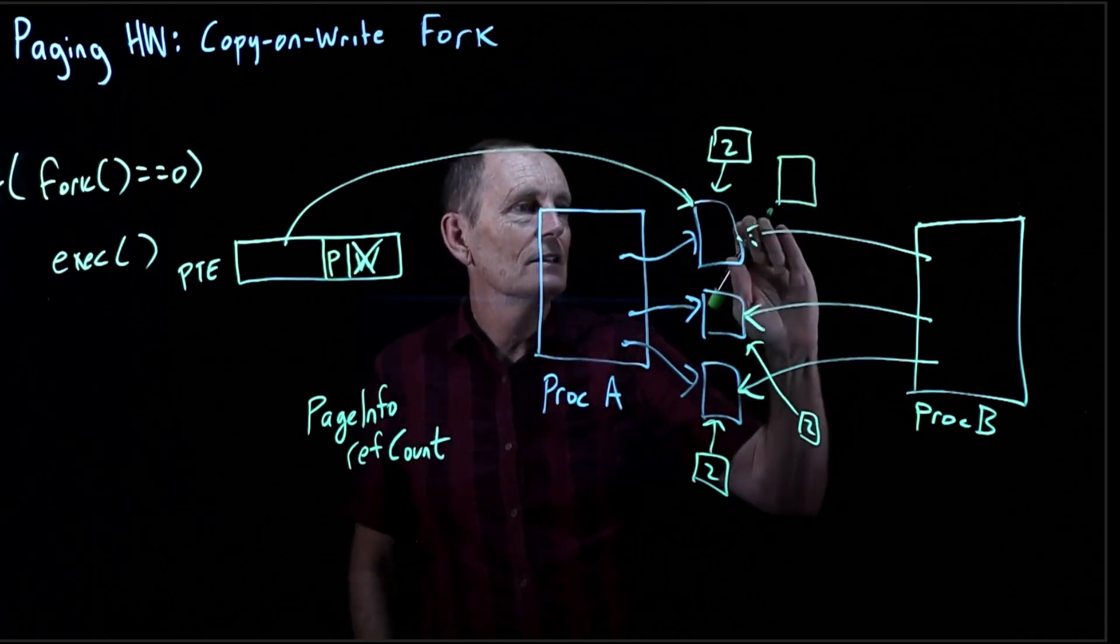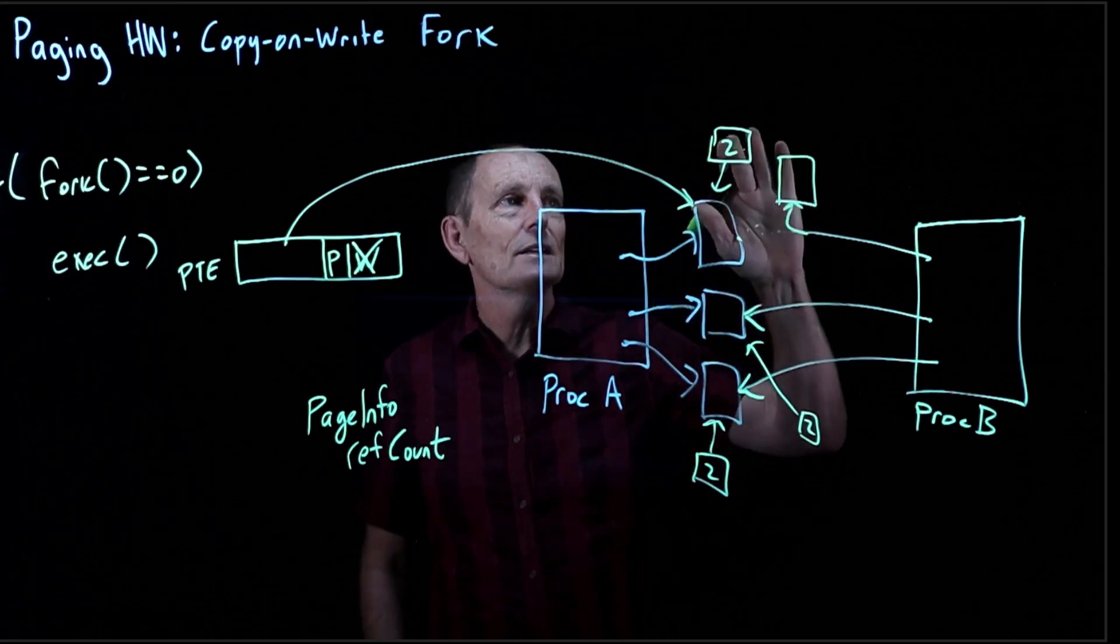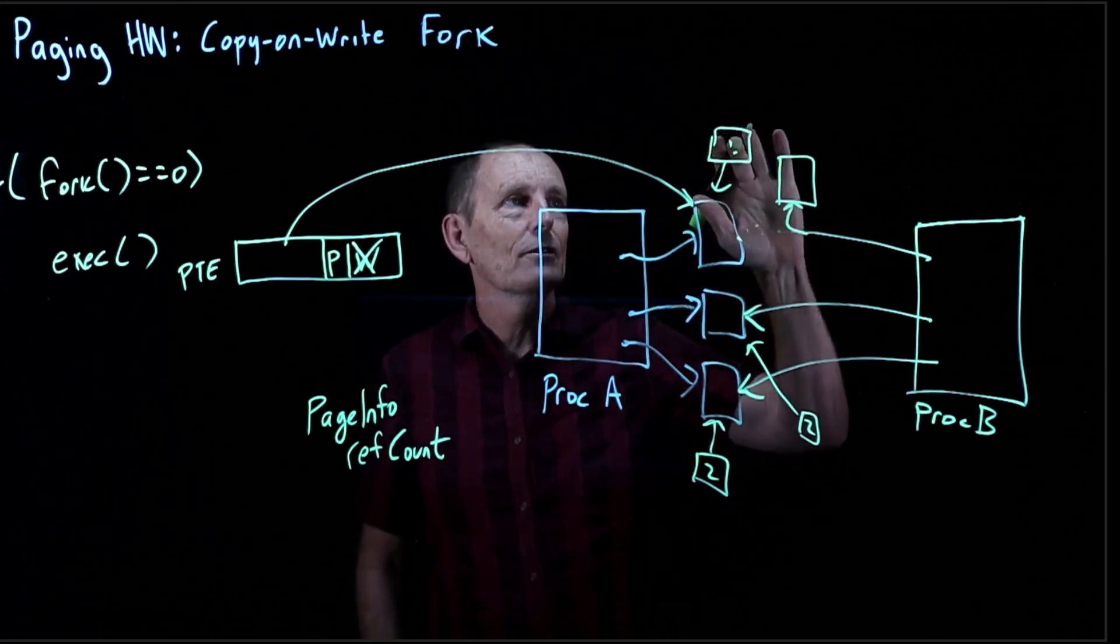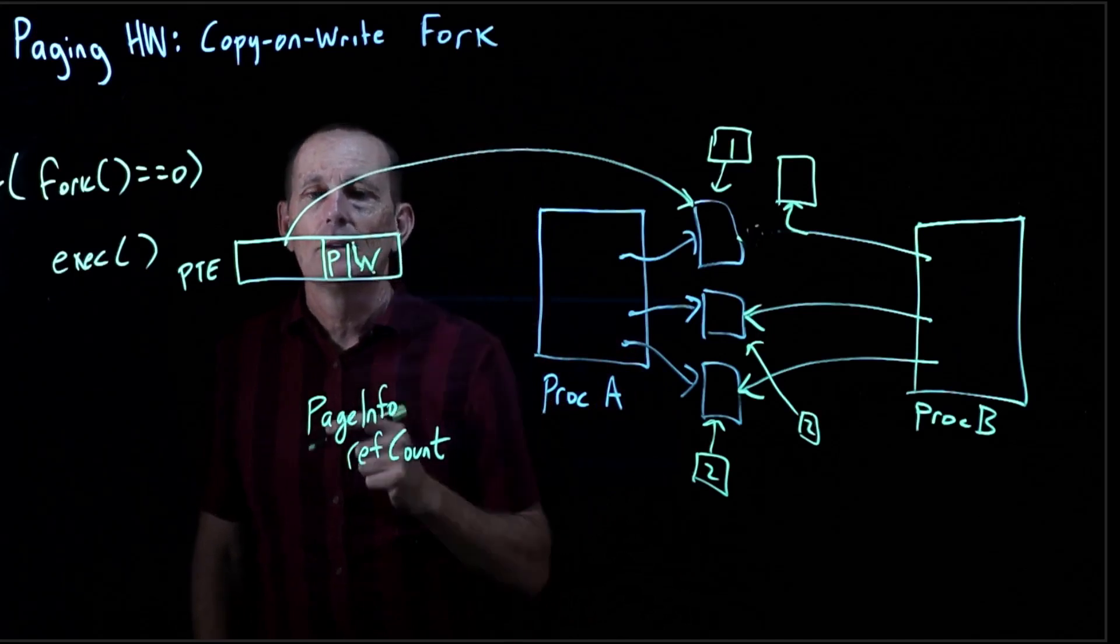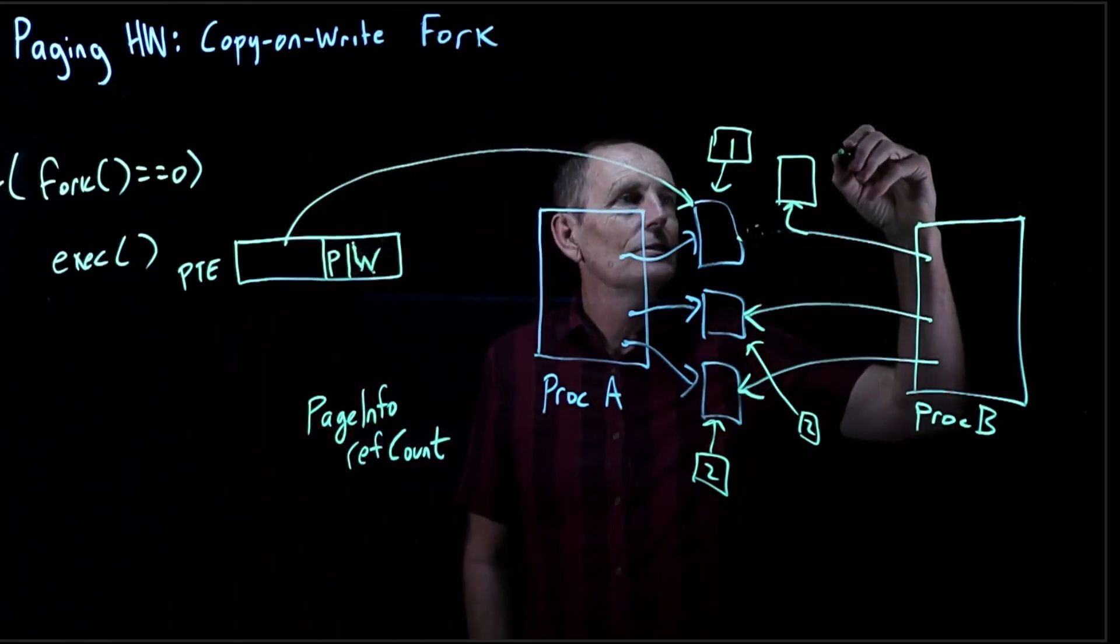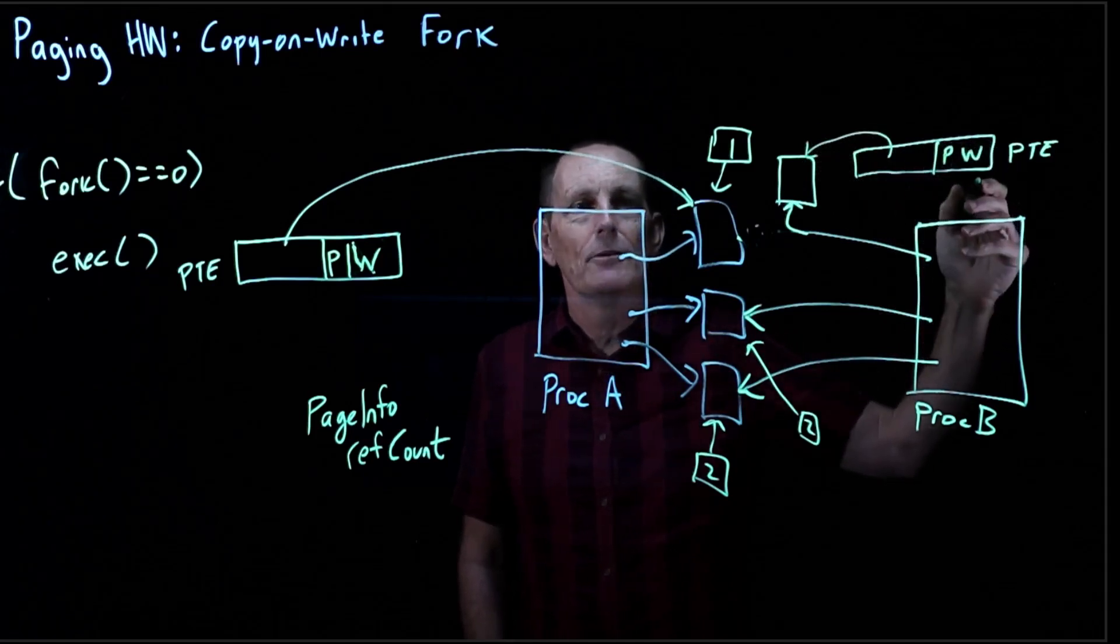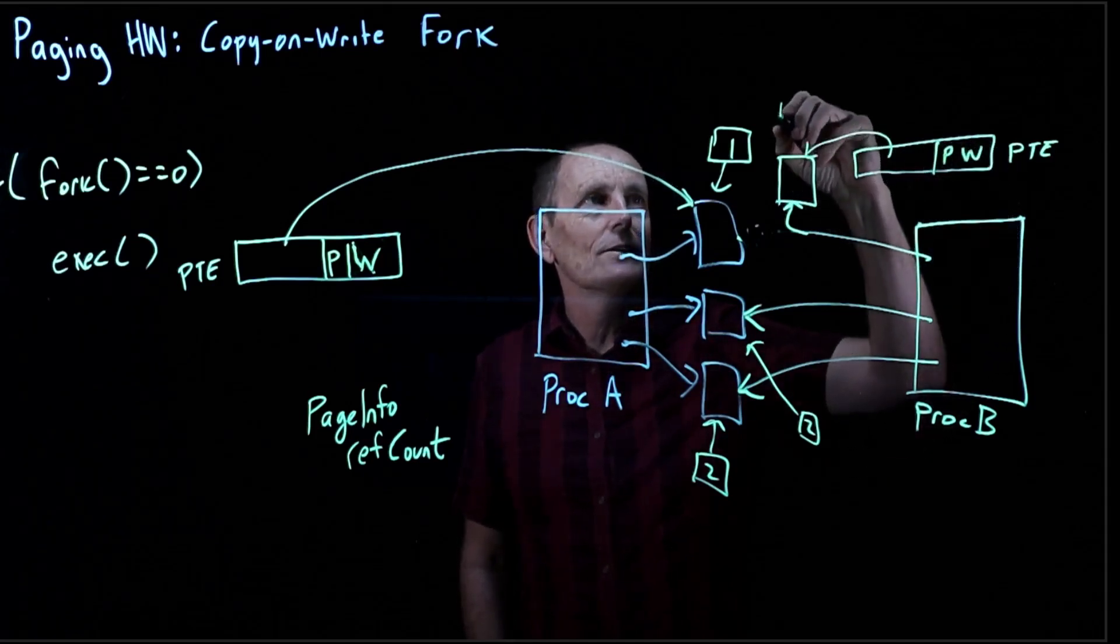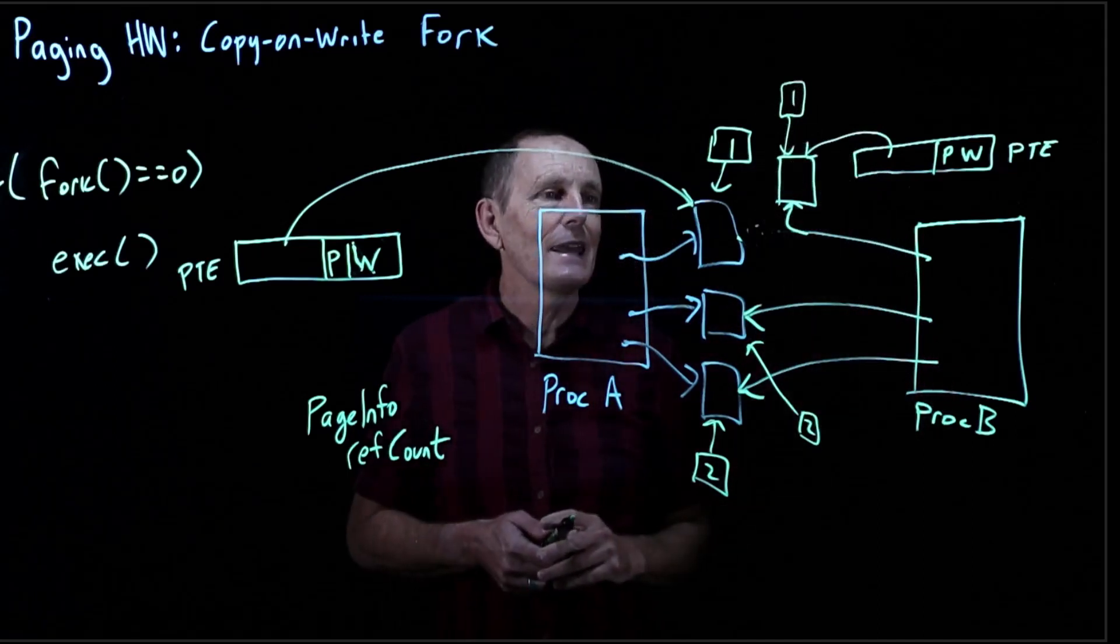Updates the pointer here, updates the reference count, updates the PTE, sets this guy's PTE to be present and writable. And finally, sets a ref count of 1 for this. So what have we got now?